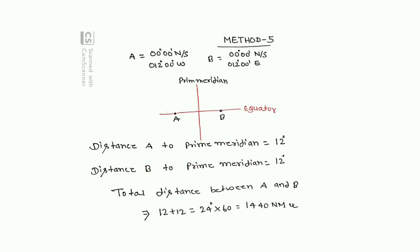Method 5: both positions are on the equator. What is the great circle distance between them? Position A is at 0°, 012°W and position B is also on the equator at 0°, 012°E. Distance A to prime meridian is 12° and distance B to prime meridian is 12°, so total distance = 12° + 12° = 24° = 1440 nautical miles. Always draw a diagram for this kind of problem. Hope you understood — if you have any doubts, message me. Thank you so much for watching.